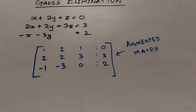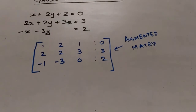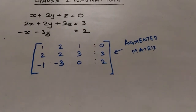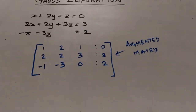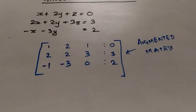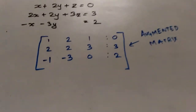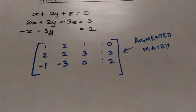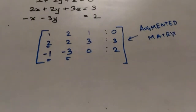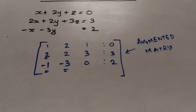Now, what we have to do is convert this augmented matrix into an upper triangular matrix by applying row transformations. The main step in the Gauss elimination method is to convert the augmented matrix into an upper triangular matrix using row transformations. To do this we need to make the lower-left elements zero.